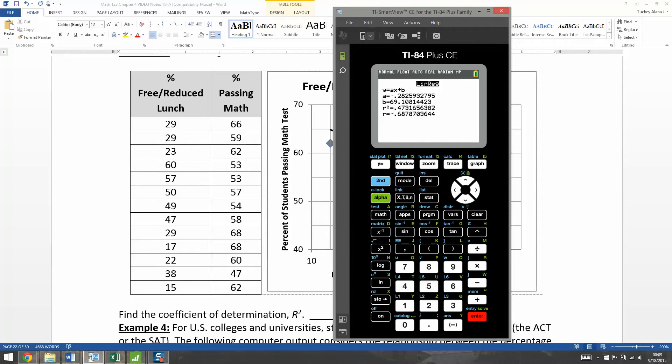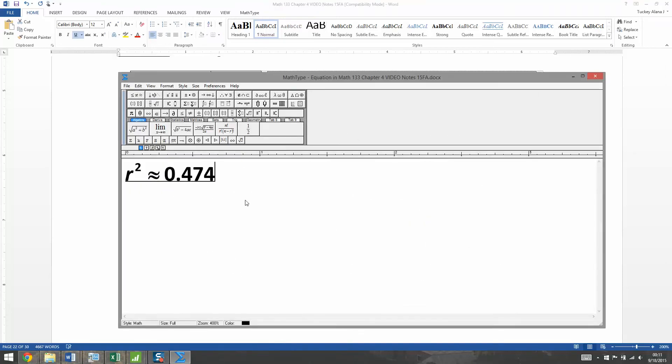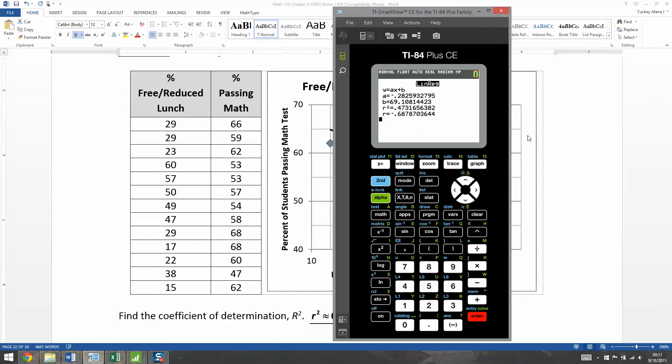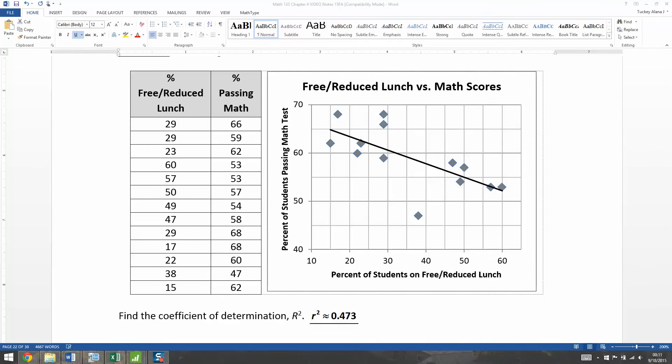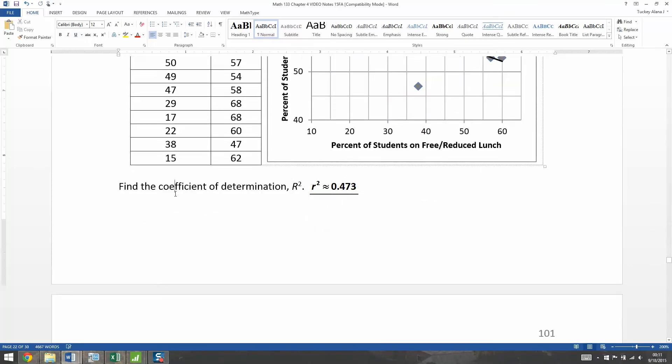And there's my R-squared, 0.473. So let me type that in right here. There we go, 0.473 when you round it. So there we have it.